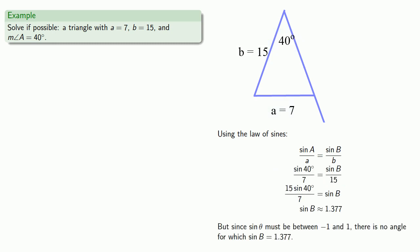And since sine of theta must be between minus 1 and 1, there is no angle for which sine of B is equal to 1.377. And so we know there is no triangle which has these sides and angles.